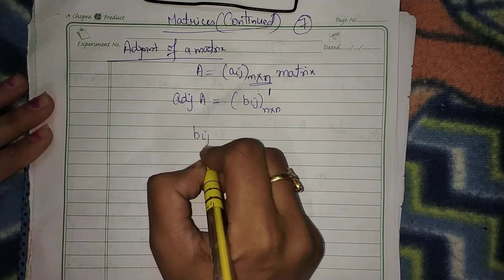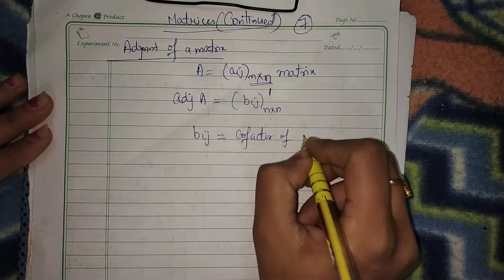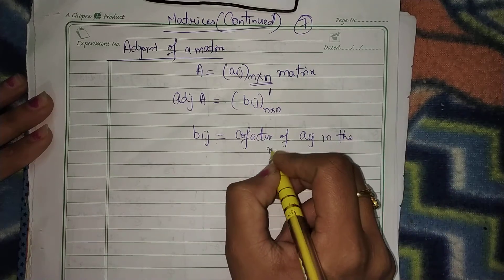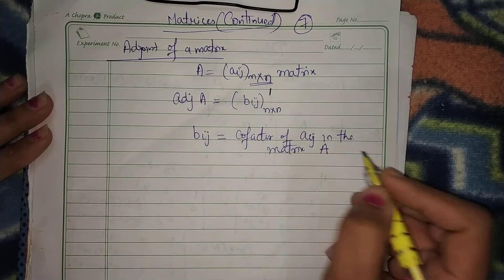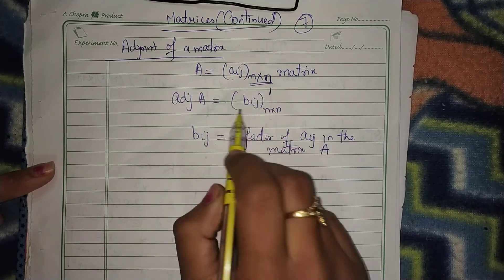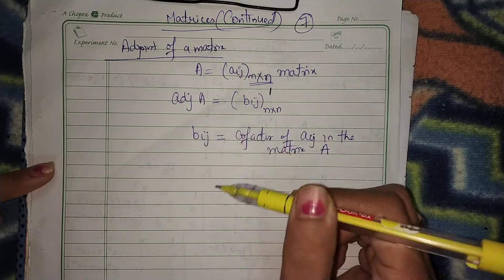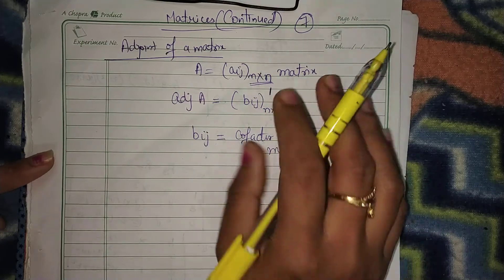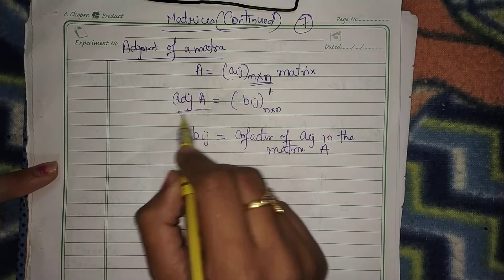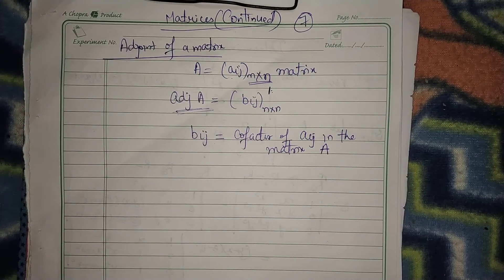Where what is Bij? Bij is the cofactor of Aij in the matrix A. So first of all, we will find the cofactor of each element, then a matrix will be formed. That means we will replace the Aij entry of A by its cofactor. A matrix will be formed, then we take the transpose of that matrix — that will give you the adjoint of that matrix. Let's make an example, it will be clear.